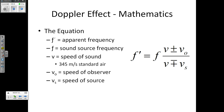We also have two other V's. We have V-sub-O, or V-naught — that's going to be the speed of the observer, so how fast the person listening to the object is moving. Vs is going to be the speed of the sound source — how fast the object making the noise itself is moving. The important thing for the Doppler Effect to occur is that these two speeds need to be different.